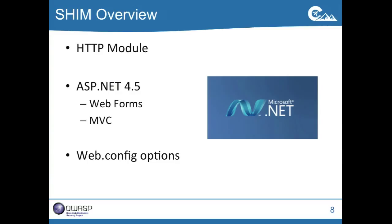So that brings us to our implementation. It's an HTTP module. They run every request — it's kind of like a filter in Java. Every request that comes through the IIS pipeline, the module hits it. Right now we're claiming it supports .NET 4.5 because that's what the project defaulted to and that's what we built it under. We haven't tested it anywhere else, but it should run — it's not using any crazy libraries. It supports Web Forms and MVC, and all we have to do is modify three things in our web.config file to turn this on.